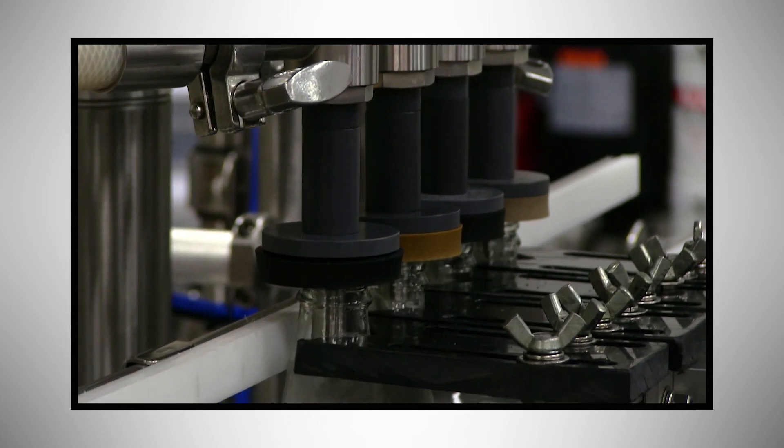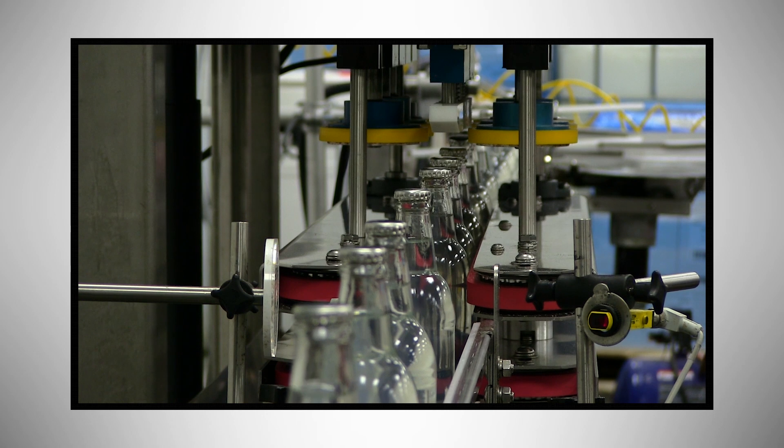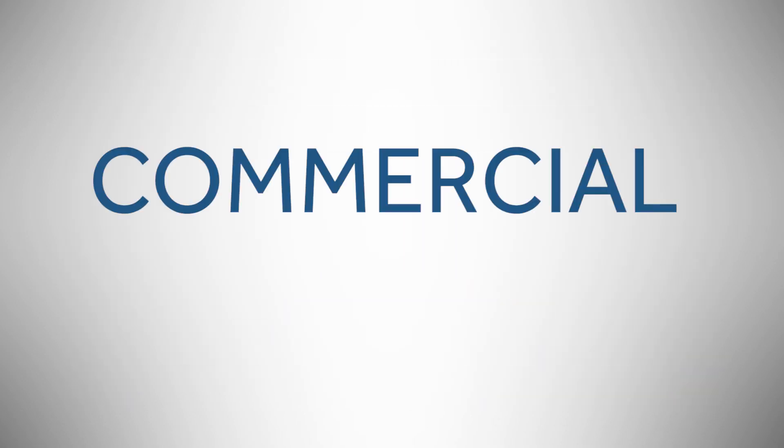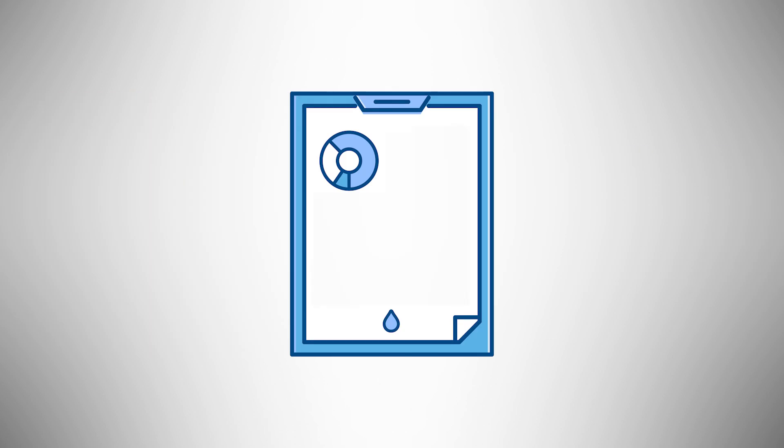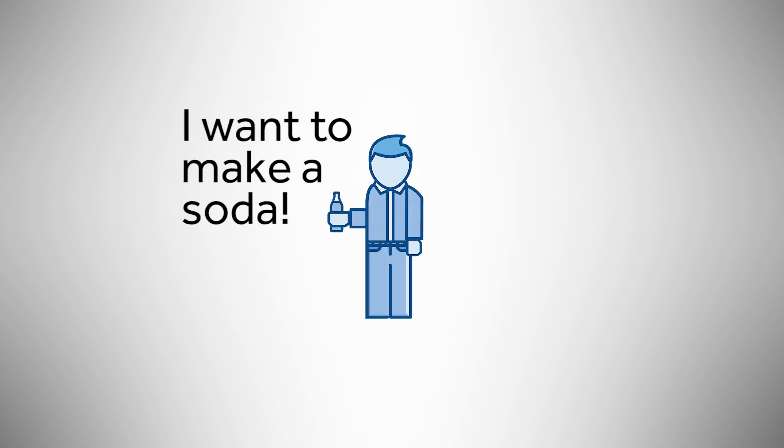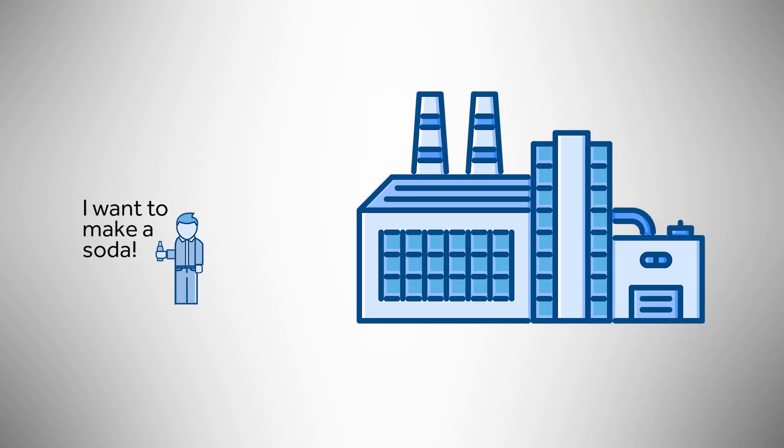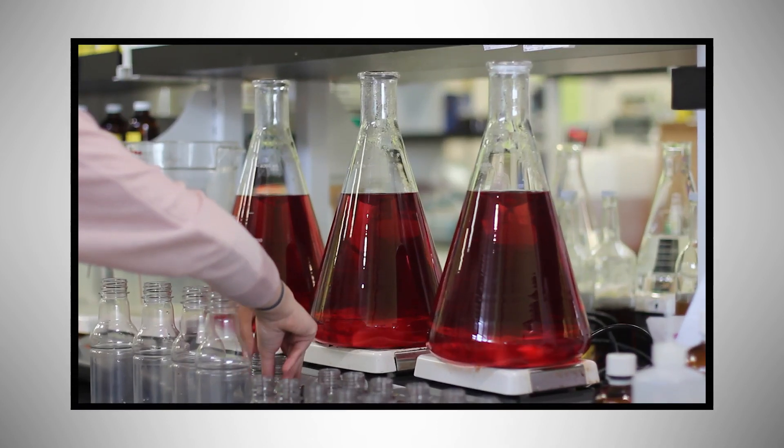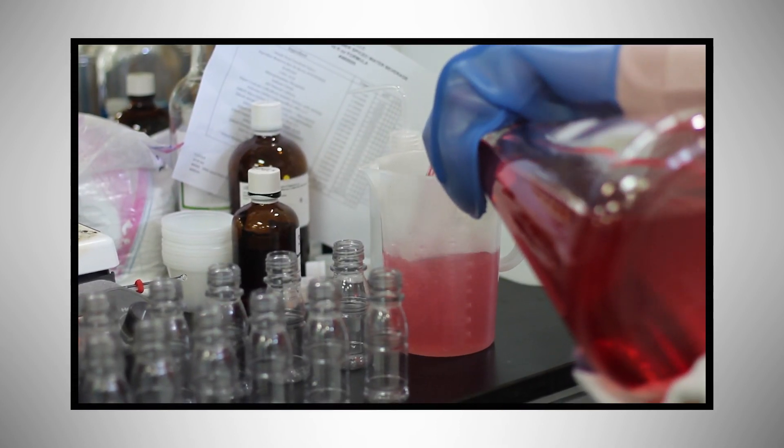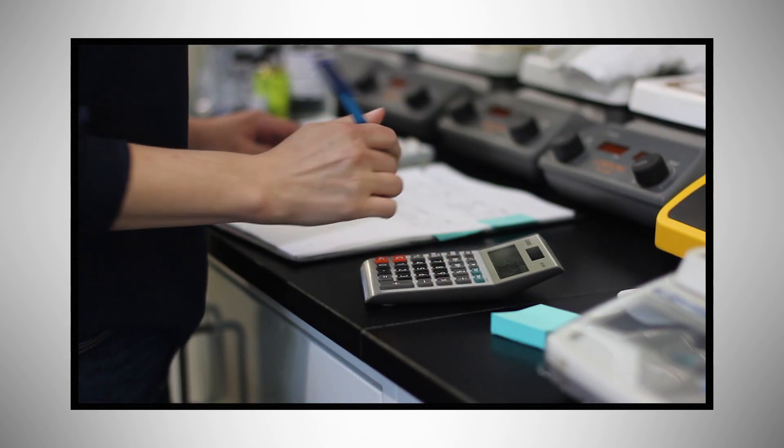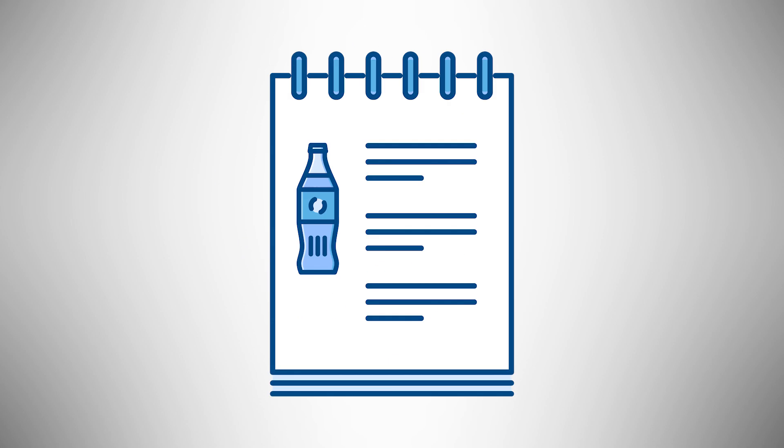Those are some of the questions you'll need to answer before you select a co-packer. There are also a few things you'll need to provide to your co-packer before your first production run. You need to have a commercial formulation, the recipe for your beverage that has been scaled up for mass production. It's common for people to reach out to a local bottler and hear the same response: call us when you have a formulation. If your development team has done their job right, your co-packer will be able to easily follow your formulation and create the same beverage every single time.